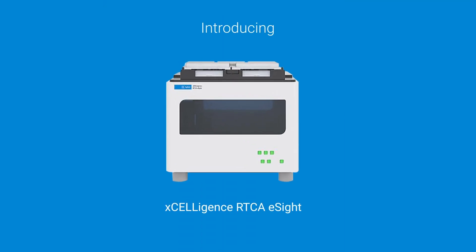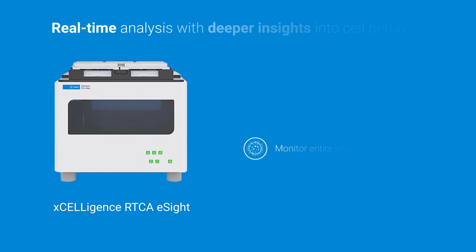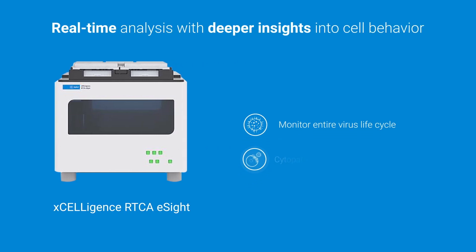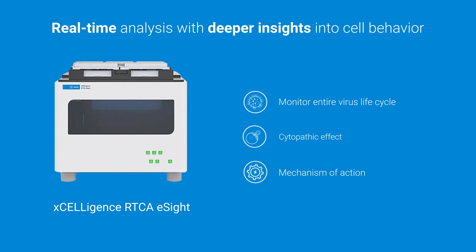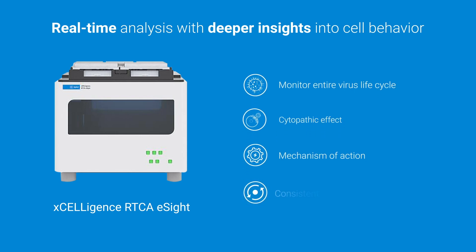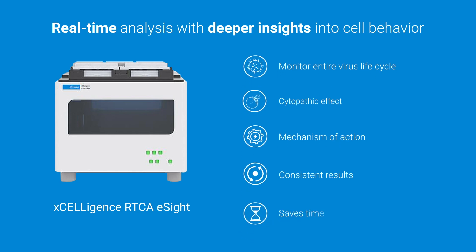Introducing the Agilent Excelligence RTCA eCycle. In a single assay, monitor the entire virus life cycle, cytopathic effects, and drug mechanism of action. The automated real-time data acquisition means you'll never miss the best time point to calculate viral titers or lytic activity.